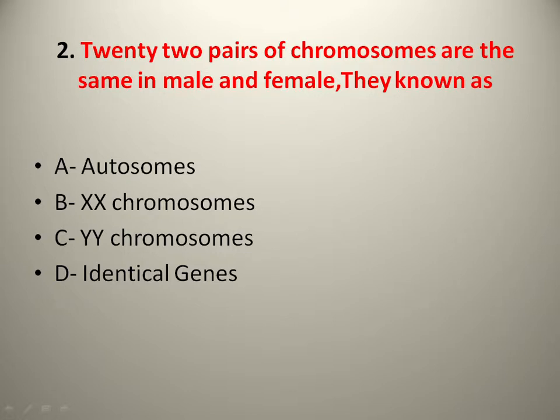22 pairs of chromosomes are the same in male and female; they are known as autosomes. The sex chromosomes are XX or XY chromosomes. There are 23 pairs total — 22 autosomes and 1 pair of sex chromosomes.